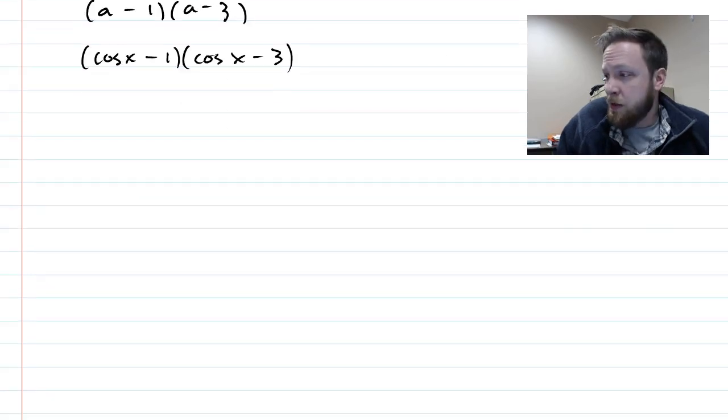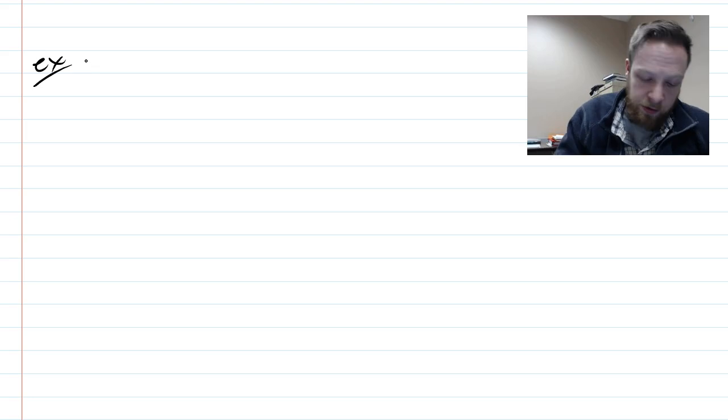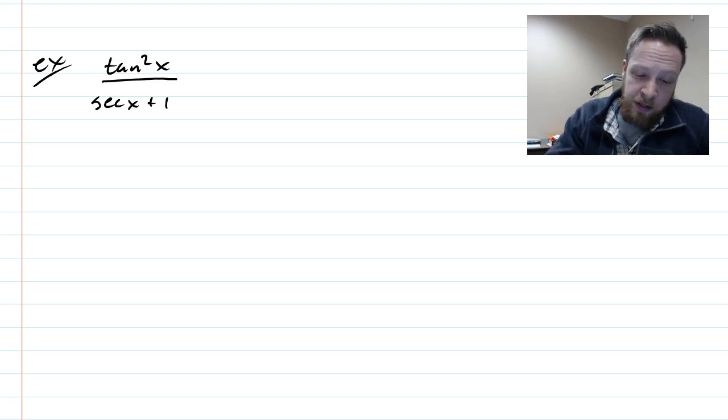So here is another example where we're going to be looking for factorizations. We have tan squared over secant x plus 1. And now, you see a secant and a tan squared. This should be making you think in your mind, maybe this is a Pythagorean identity.